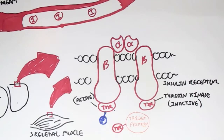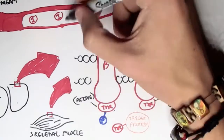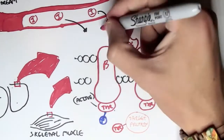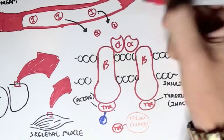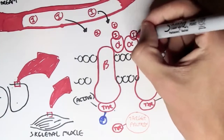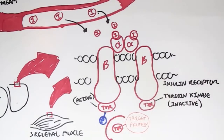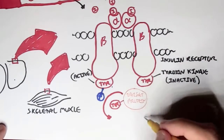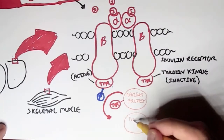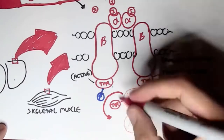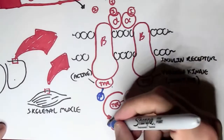So how does the target protein become active, and how does the tyrosine kinase receptor — the insulin receptor — become stimulated? When insulin travels to the target organ, such as the liver, the two insulins will bind to the two alpha subunits, which will then cause tyrosine kinase to phosphorylate the target protein inside the cell.